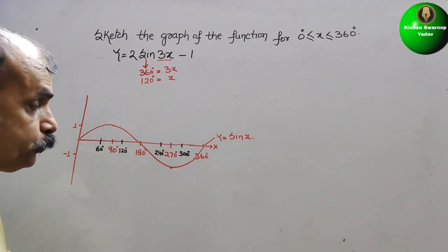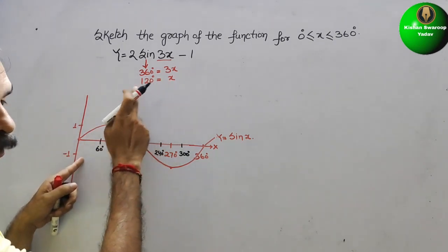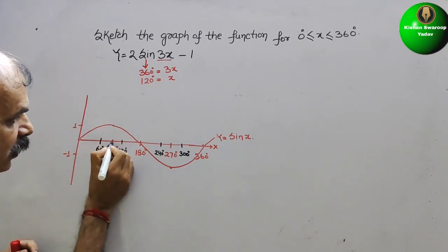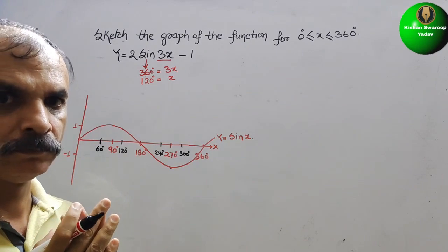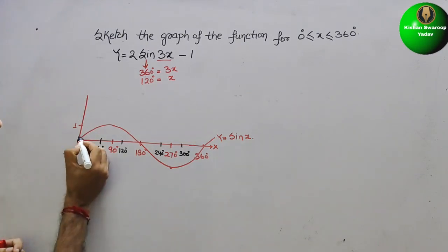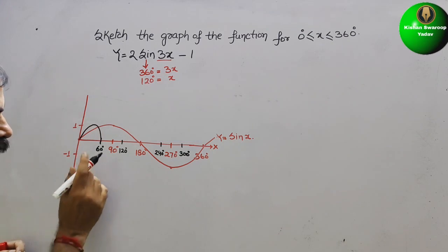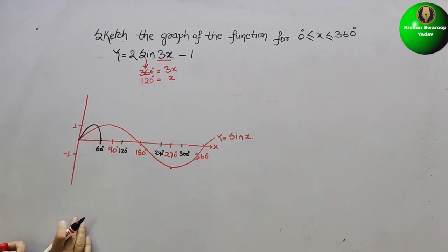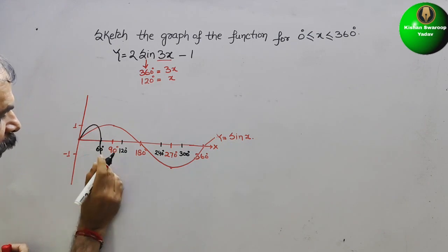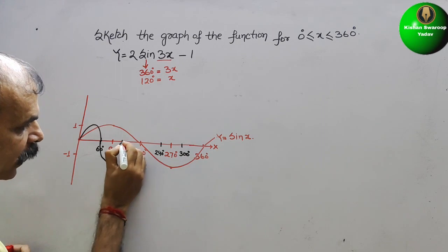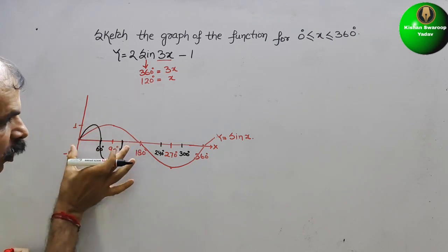For the first cycle of sin(3x): it starts at 0, rises to 1 at 60° (the peak, which corresponds to the 90° position in a normal sine), comes back to 0, then goes to minus 1 at 90°, and returns to 0 at 120°. So one complete cycle is done at 120°.